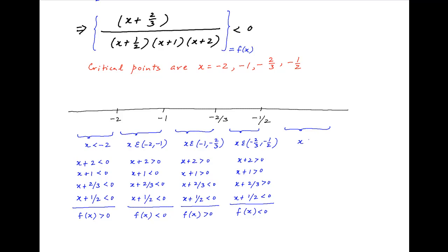And finally, when x is greater than minus 1/2, (x plus 2), (x plus 1), (x plus 2/3), and (x plus 1/2) are all positive. Therefore, f(x) is positive when x is greater than minus 1/2.